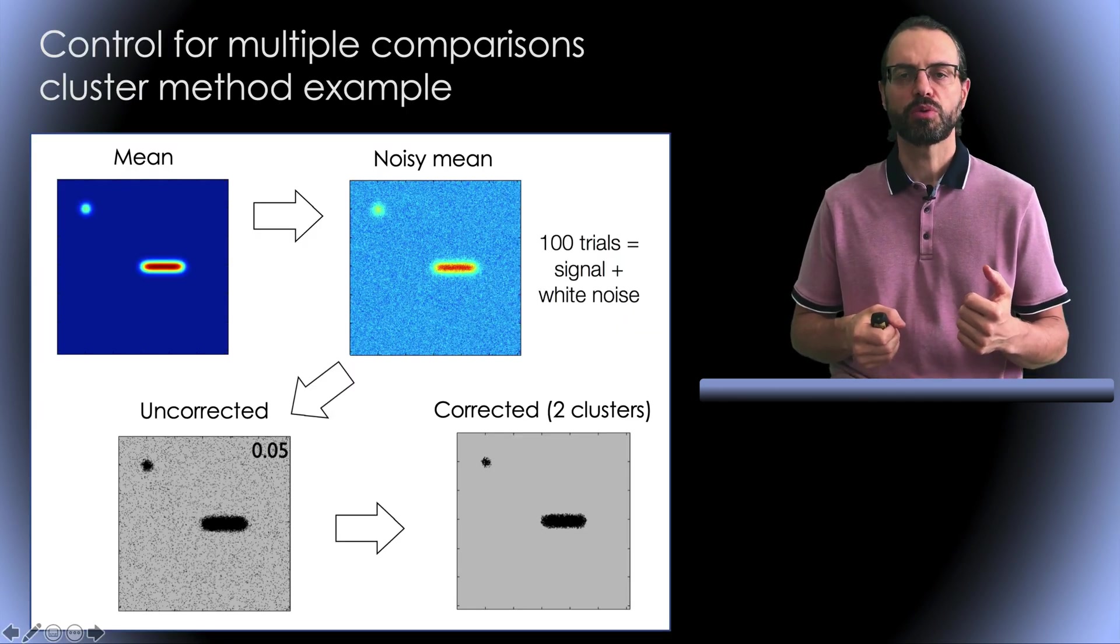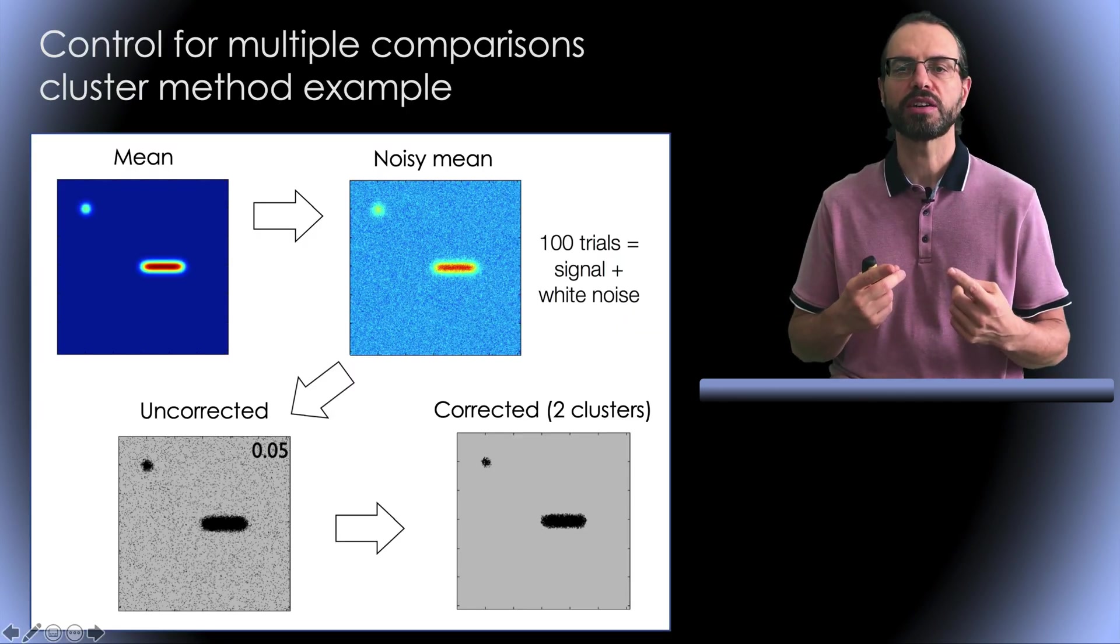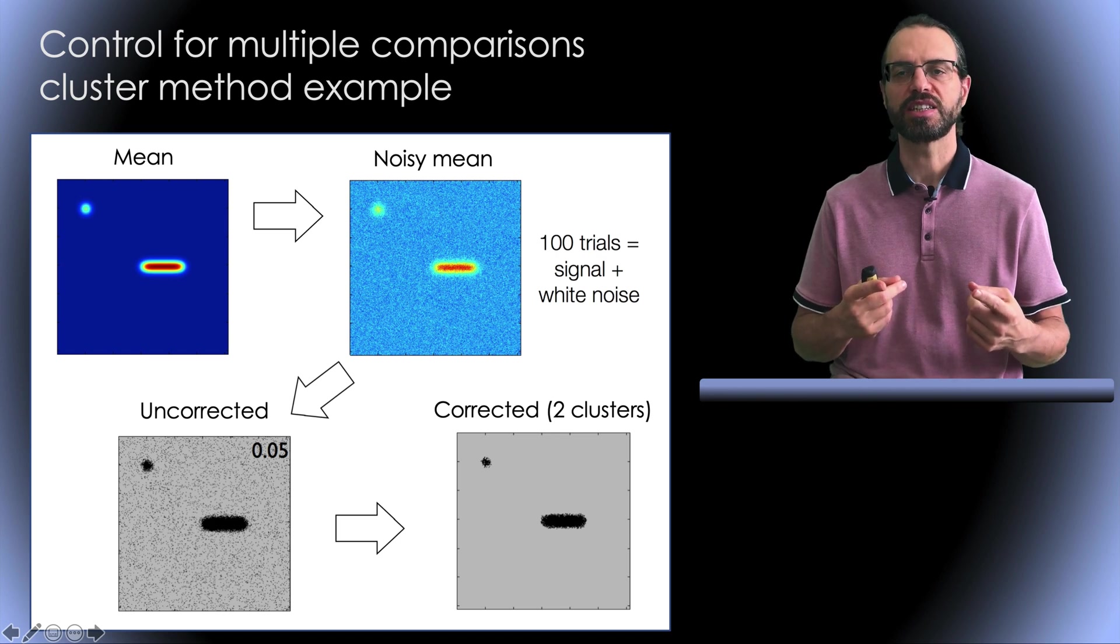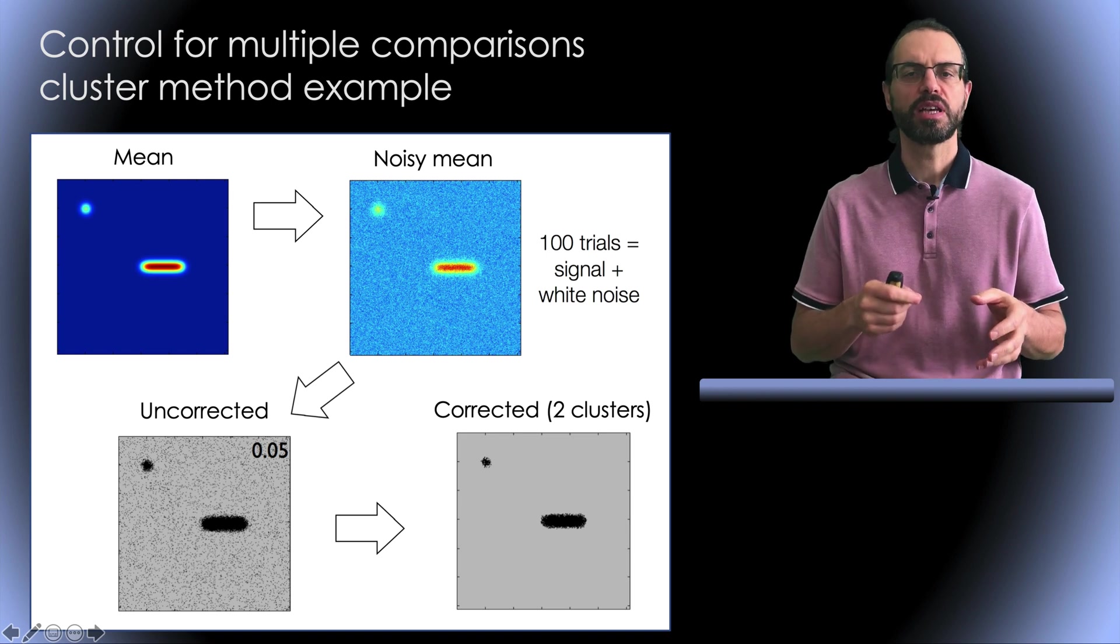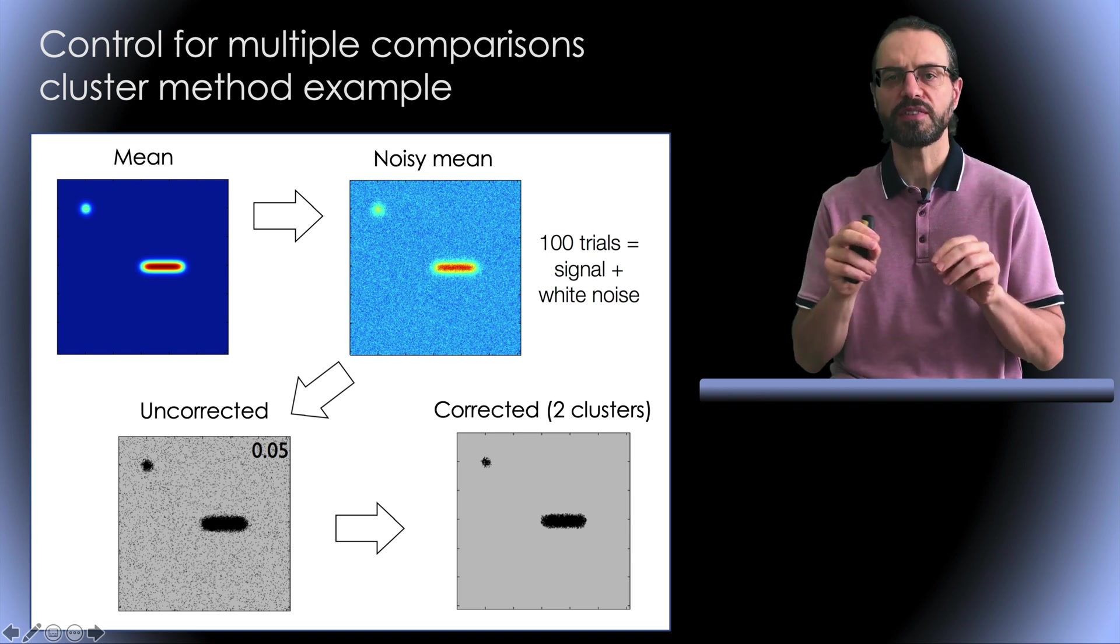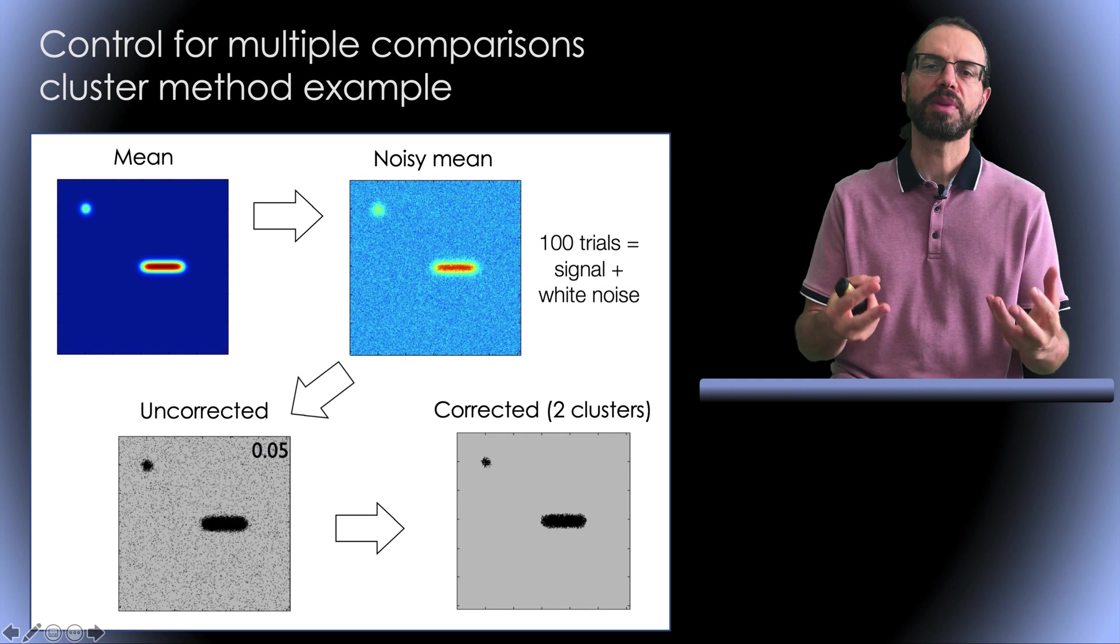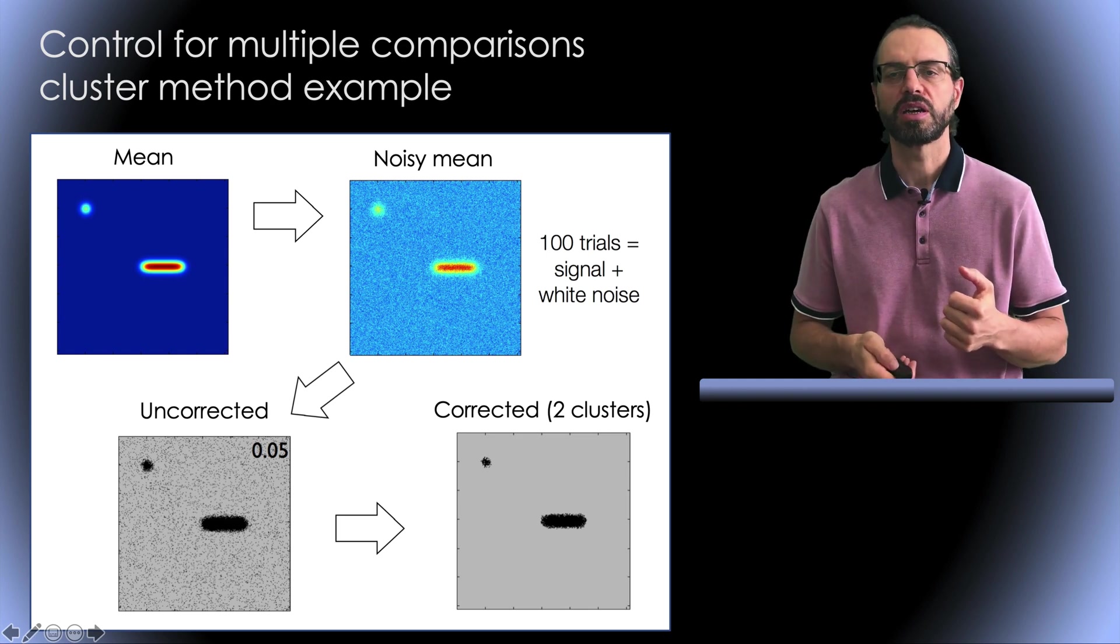Here is another example where we have 100 noisy trials and we're interested in identifying significant regions in the mean. If we do not correct for multiple comparisons, a large number of pixels are significant. When we apply the cluster method, only two regions are significant.